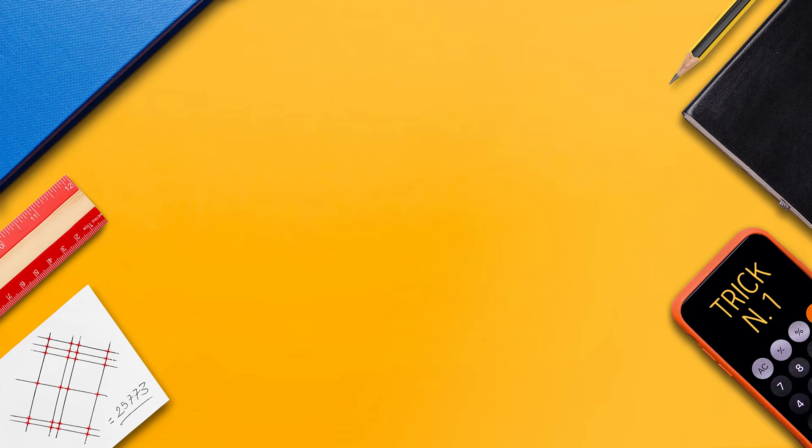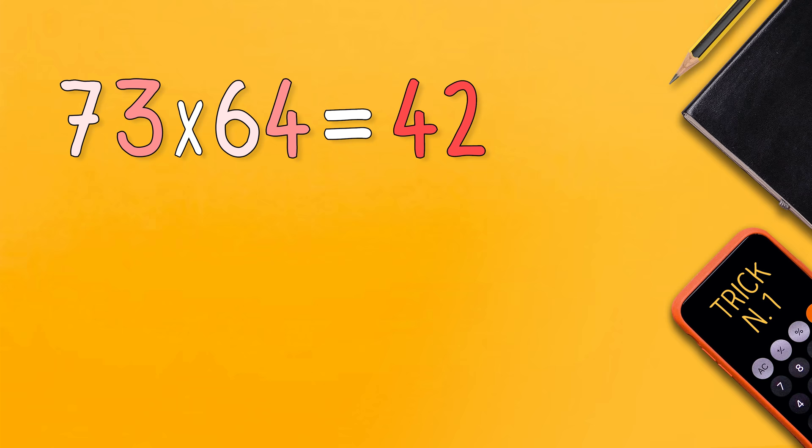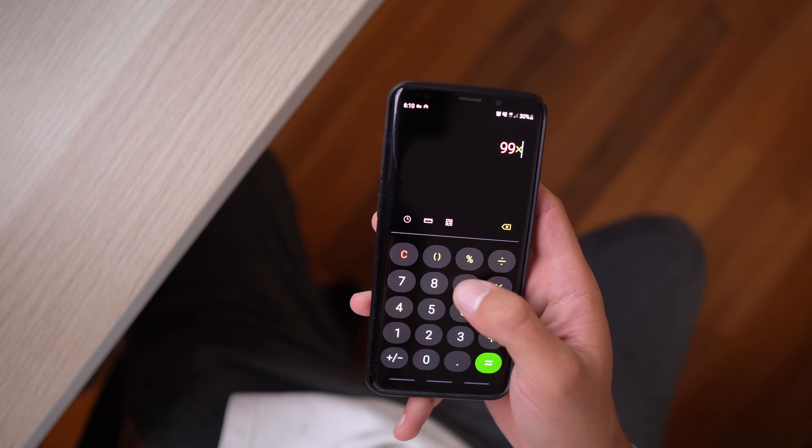The second case is for example 73 by 64, 7 by 6 is 42, 3 by 4 is 12. In this case the result already has four digits which is the maximum amount of digits you can have by multiplying two numbers with two digits.